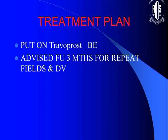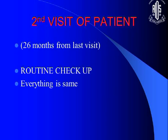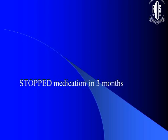We concluded this was classical normal tension glaucoma and put the patient on Travoprost, advising follow-up every three months. The patient did not come for 26 months. When he came back he was absolutely normal, and I told everyone the treatment was perfect — until the patient told us he had not put any medicines after the first three months. So it had been more than two years without treatment, and he was absolutely fine. This is NTG for you.